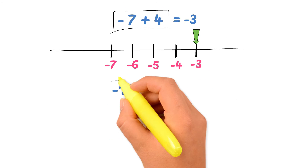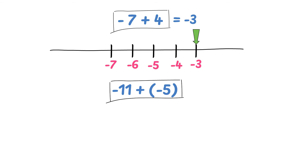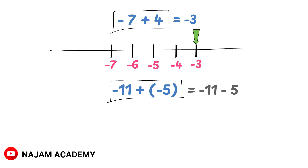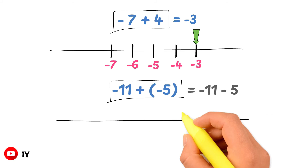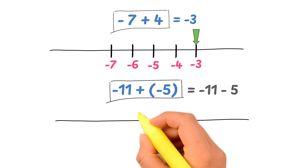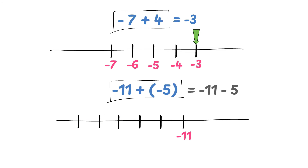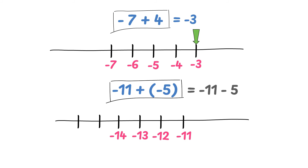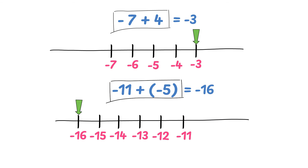Now what is negative 11 plus negative 5? We know that it equals negative 11 minus 5. Draw the number line and write here the first integer which is negative 11. The second integer is negative 5, so we have to travel 5 spaces to the left: 1, 2, 3, 4, and 5. This lands on negative 12, negative 13, negative 14, negative 15, and negative 16. Therefore, negative 11 plus negative 5 is equal to negative 16.